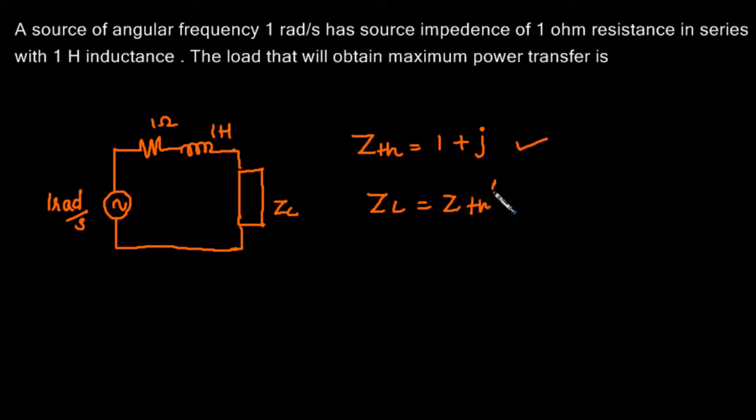That means it will be 1 minus j. That is, we have to put a 1 ohm resistance and a 1 farad capacitance for maximum power transfer.